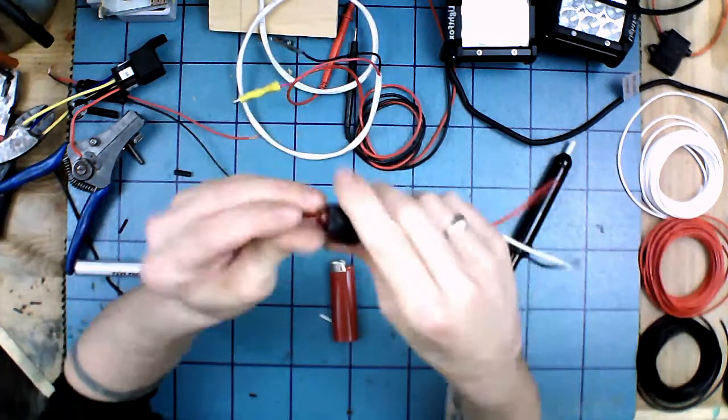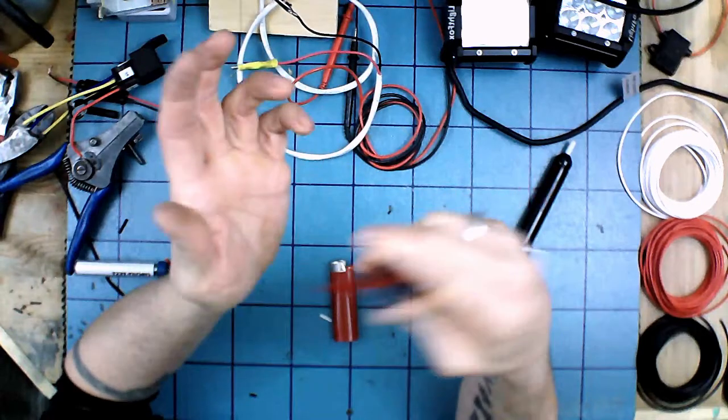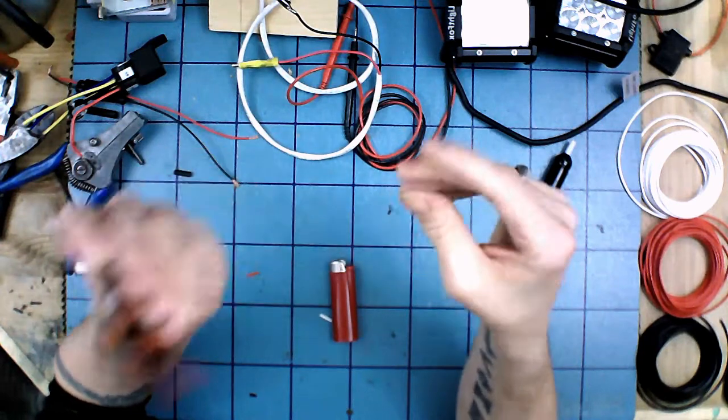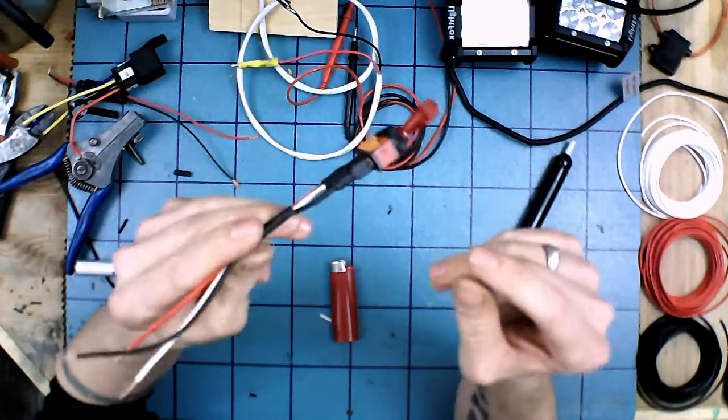So there you go. That is the toggle switch, basic classic LED toggle switch. Pick them up at most automotive supply stores. Hope you liked the video and stay tuned for the next section.